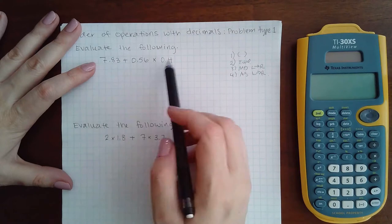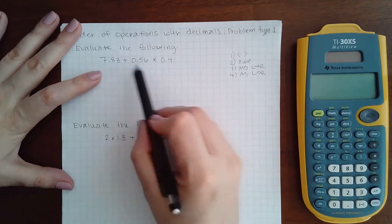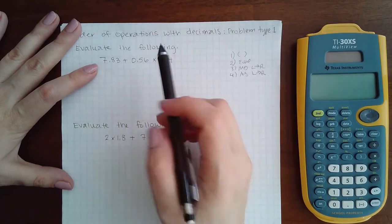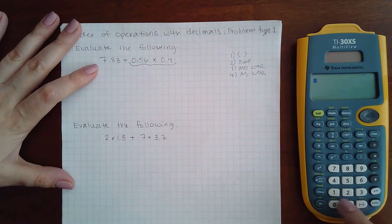Here I don't have any parentheses or any kind of grouping symbol, so we don't have any exponents or square roots or absolute values to evaluate, so we're going to jump into this multiplication here.